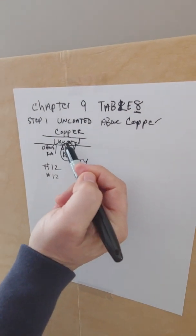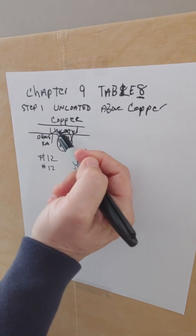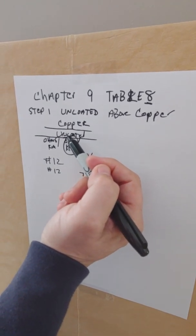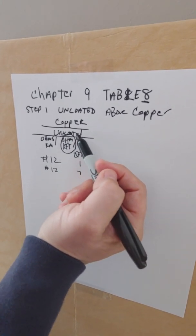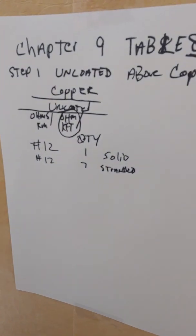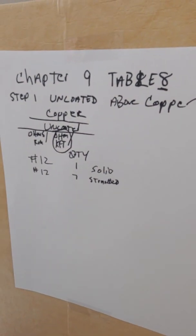The reason why we use the uncoated is that that is the regular conductors that we use every day, the THHN, the THWN-2. Coated is something used different.